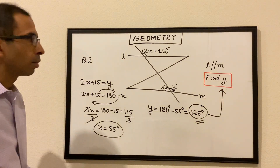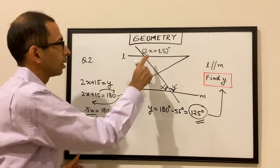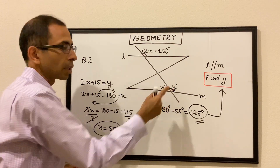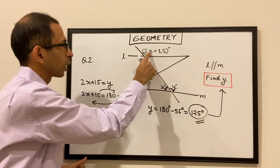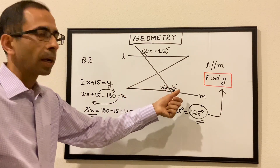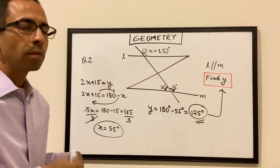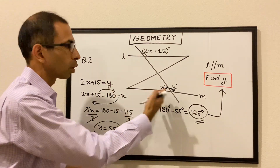Pretty straightforward question. These two lines are parallel, so these two angles are corresponding to each other. 2x plus 15 is equal to y. We wrote y in terms of x, we solved for x, and then finally we got y.